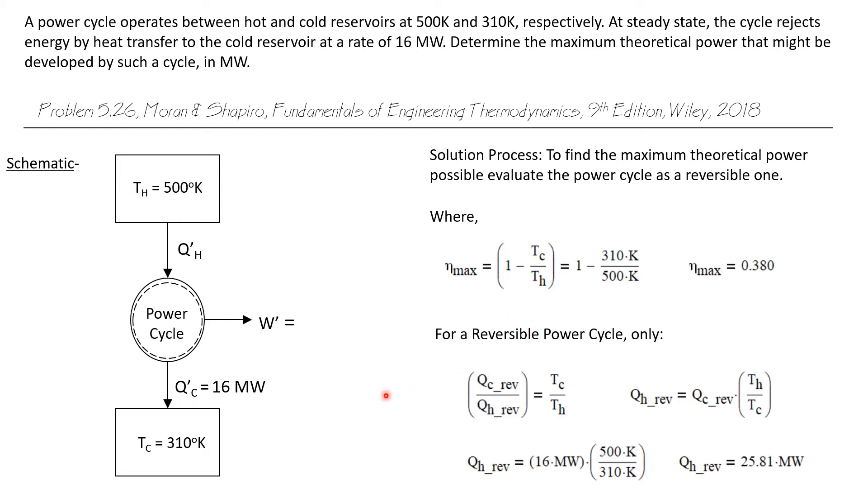We also know for a reversible power cycle only that Qc over Qh is equivalent to Tc over Th. But that's only for a reversible process. So we can rearrange this equation and solve for Qh. Well Qh is just Qc both for reversible processes times Th over Tc. We know Qc reversible is 16 megawatts. We have our high and cold temperatures. And we calculate that Qh for a reversible process would be 25.81 megawatts.